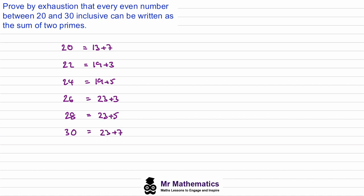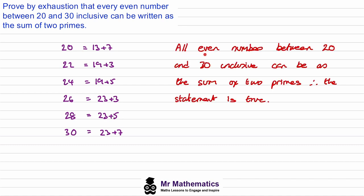By considering each individual case, we've shown that all the even numbers between 20 and 30 inclusive can be written as the sum of two primes. Our conclusion is: we've shown all even numbers between 20 and 30 inclusive can be written as the sum of two primes, and therefore the statement is true.